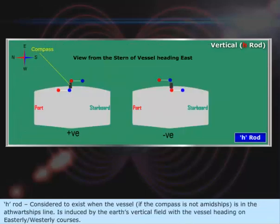H-Rod: Considered to exist when the compass is not amidships in the athwartships line. It is induced by the Earth's vertical field with the vessel heading on easterly-westerly courses.